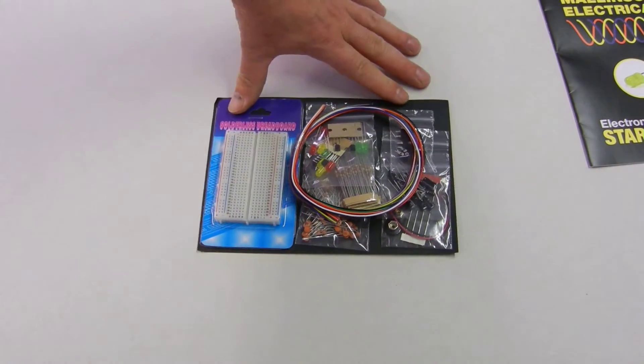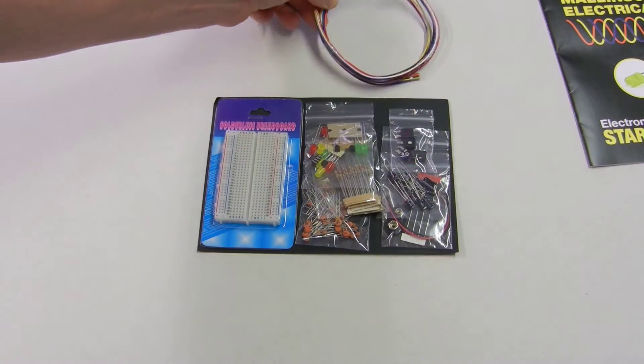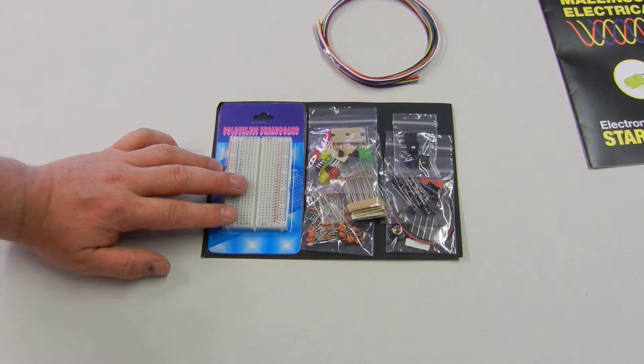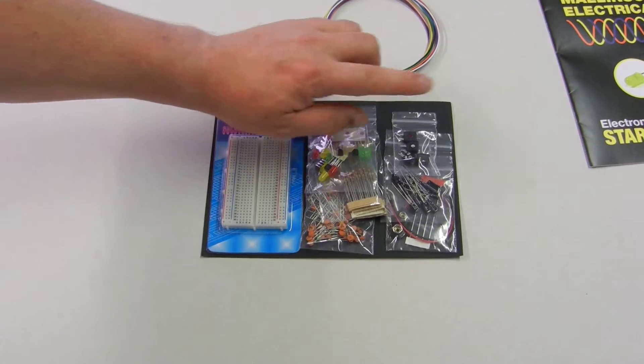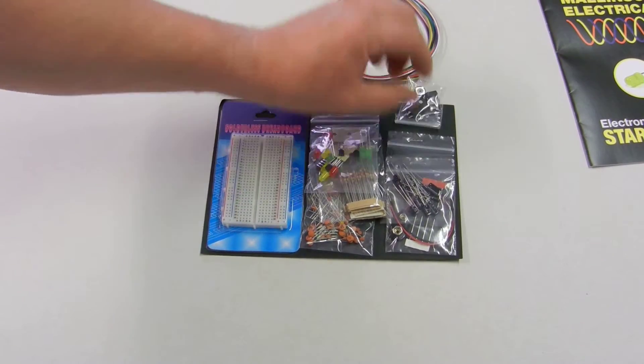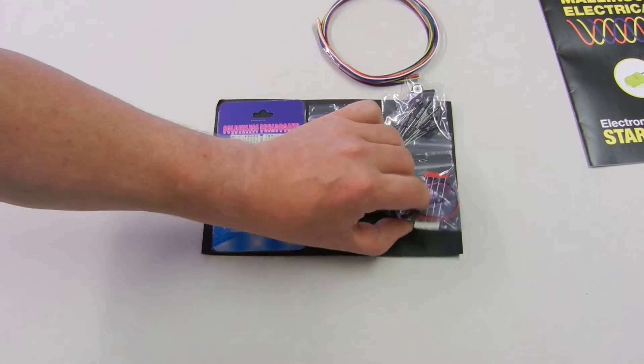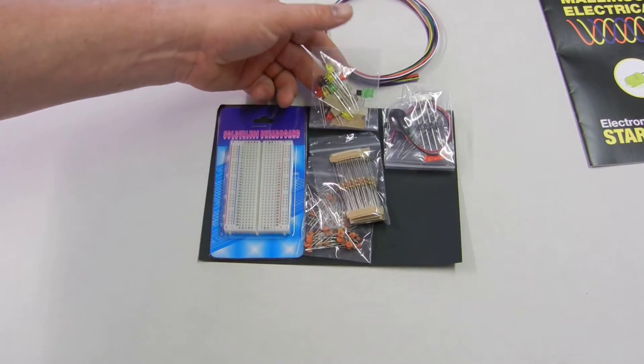Pop the instruction manual to one side, we'll come back to that later. And here we have some wire. The wire is going to be used within the breadboard to hook up our circuit. We've also got variable resistors, some electrolytic capacitors, our battery clip, and diodes.